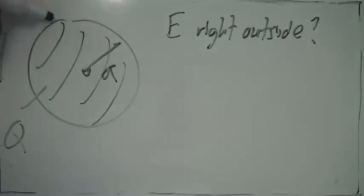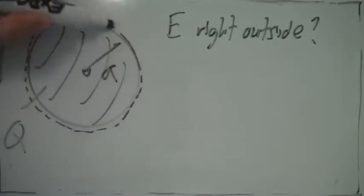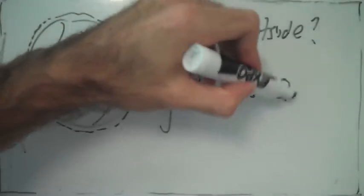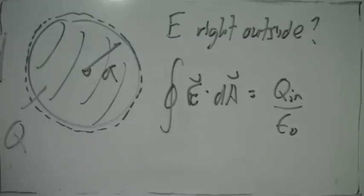We can draw a Gaussian surface right outside the surface of the sphere. If we write down Gauss's law, this relates the electric field at the Gaussian surface to the charge inside the Gaussian surface.